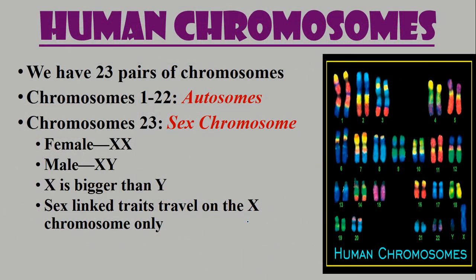Before we begin — what are human chromosomes and why are they important? We talked about chromosomes in cell division; they carry our traits. In humans we have 23 pairs, 46 total chromosomes. Numbers 1 through 22 are called autosomes, and chromosome pair 23 is called the sex chromosome. Females have sex chromosomes XX and males have XY.